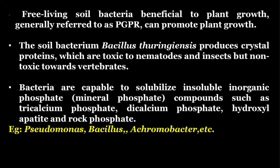Plant growth promoting rhizobacteria promote plant growth. The bacterium Bacillus thuringiensis produces crystal proteins which are toxic to nematodes and insects but non-toxic towards vertebrates. Bacteria are capable of solubilizing insoluble inorganic phosphate compounds such as tricalcium phosphate, dicalcium phosphate, hydroxyapatite, and rock phosphate. Examples of this type of bacterial species are Pseudomonas, Bacillus, Achromobacter, etc.